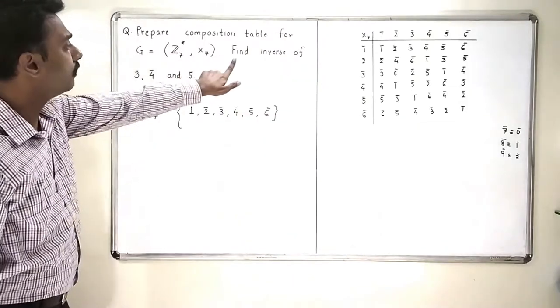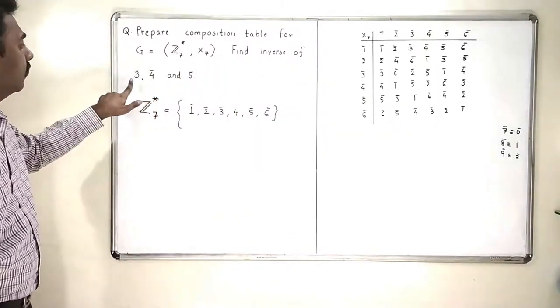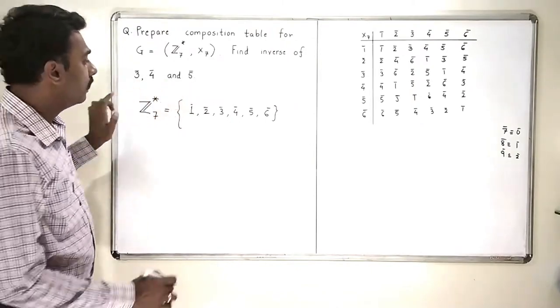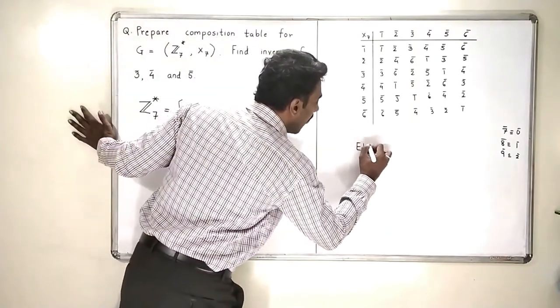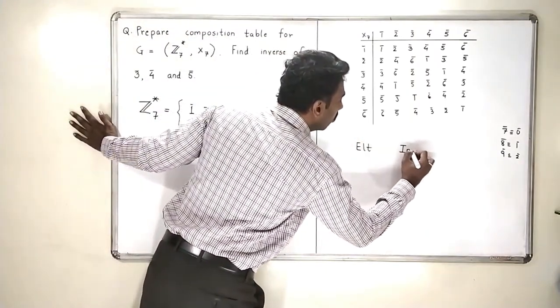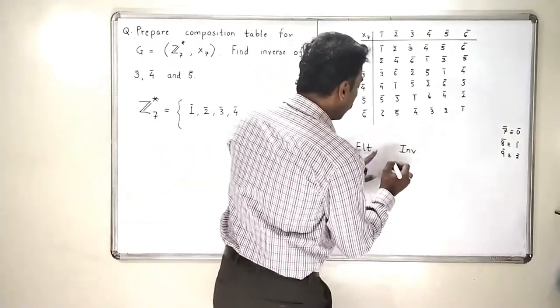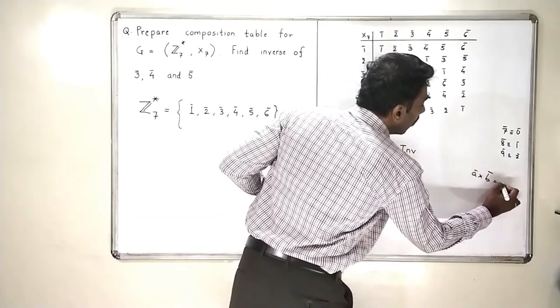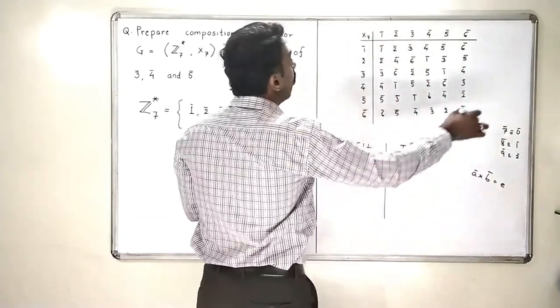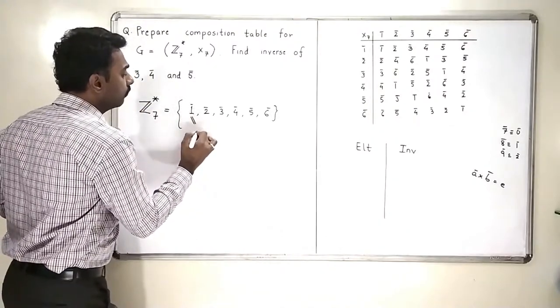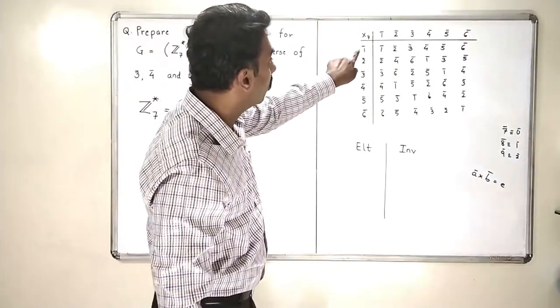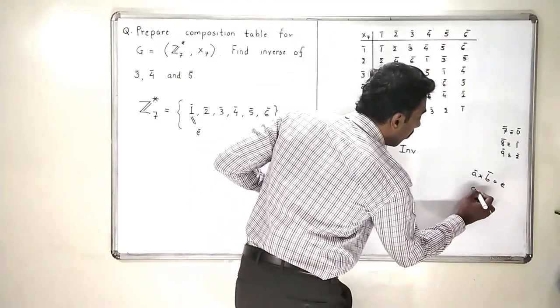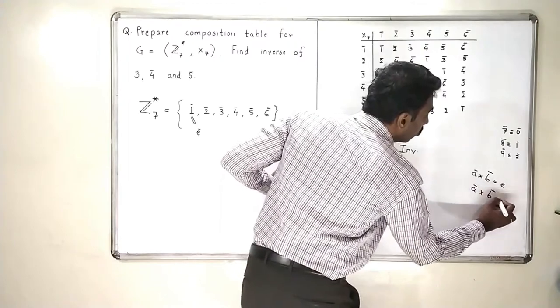Now, in the second part of the exercise, we are supposed to find the inverses of 3 bar, 4 bar and 5 bar. So, let me write element and let me write the inverse here. Now, how do you find the inverse? A bar multiplied by B bar should be equal to identity. Now, who is the identity of this group? Obviously, 1 bar is the identity of group because if I multiply 1 bar to all of them, I will get the same elements back. So, it means that A bar multiplied by B bar has to be 1 bar.